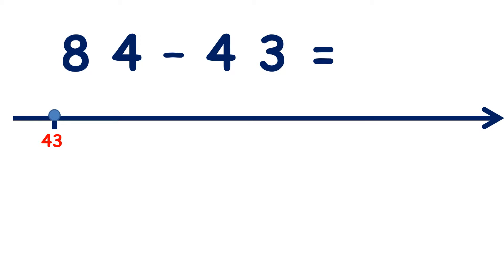So let's start on 43. How many more do I need to get to the next multiple of 10? How many more do I need to get to 50? Well, I have 3 units, and 3 and 7 make 10, so I need 7 more to get to 50.